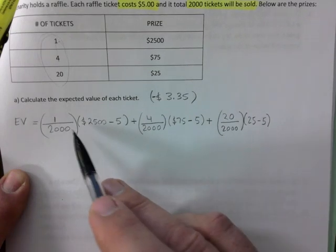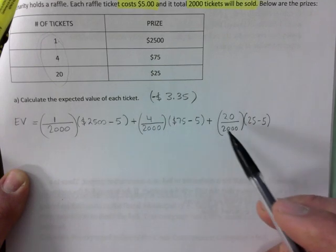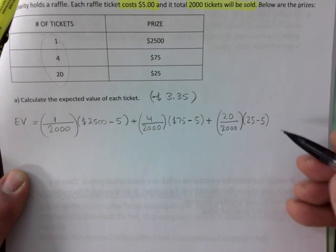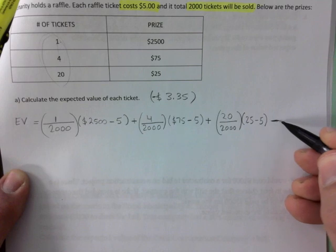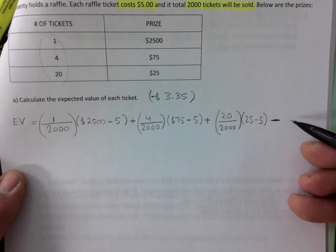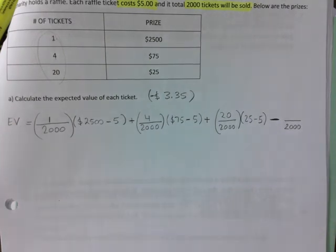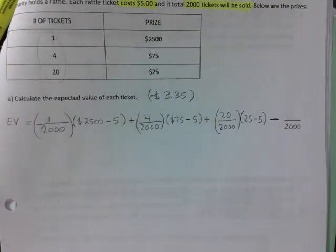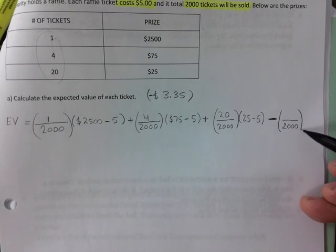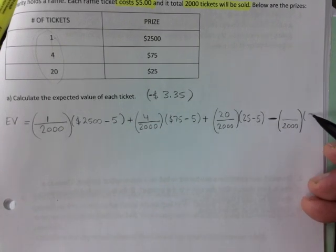So prize number one, these are your outcomes. Second prize, third prize - surprise surprise, minus. Now this is the big minus at the end. This one is different. This one is just you come up with your probability of losing, which by the way is going to be out of 2000, because only so many tickets win, all the other ones obviously you lose.